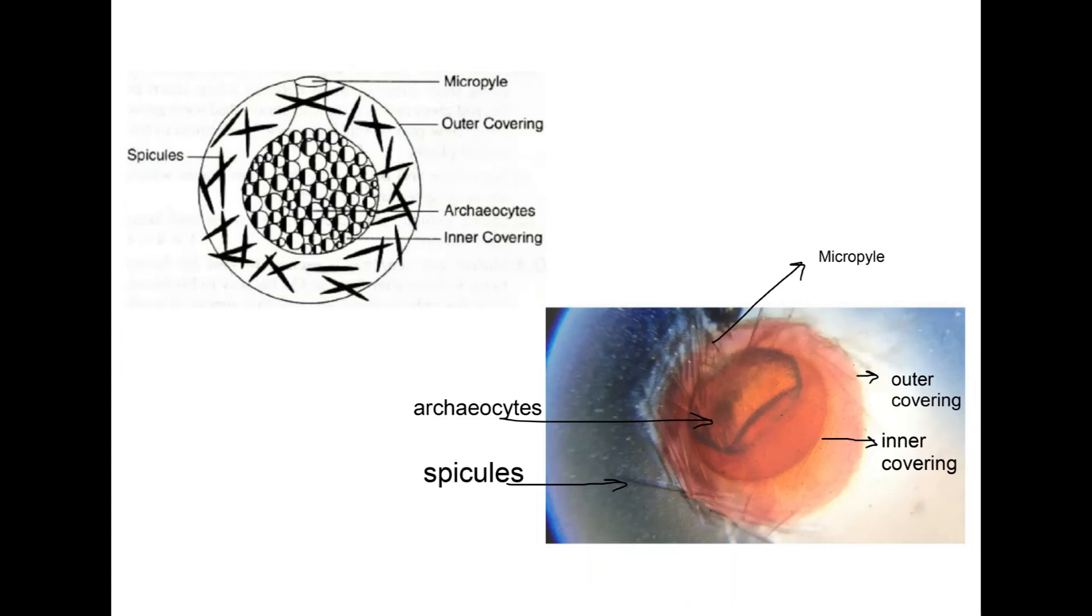As you can see here, here is our permanent slide. You can see the micropyle end, the spicules, outer covering, inner covering, and the archaeocyte cells inside. Hope you are clear how to make the permanent slide and what is the structure of gemmules found in the sponges. Thank you.